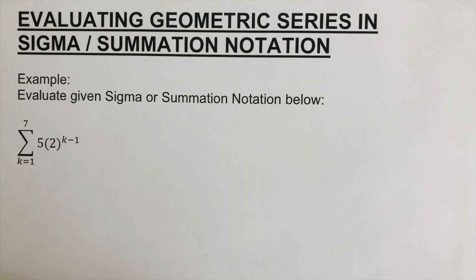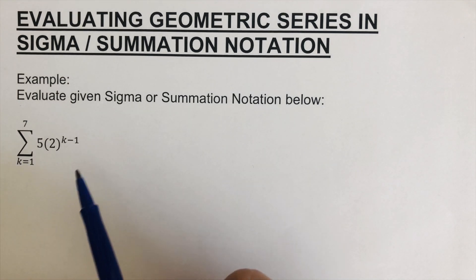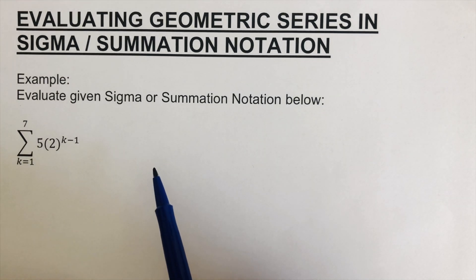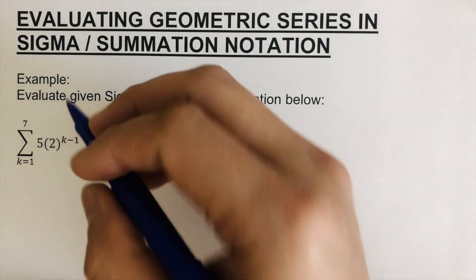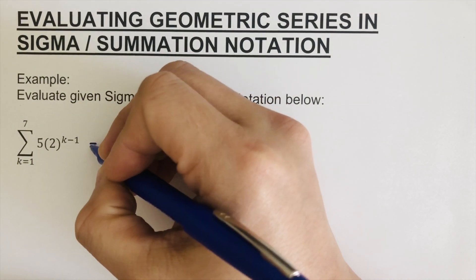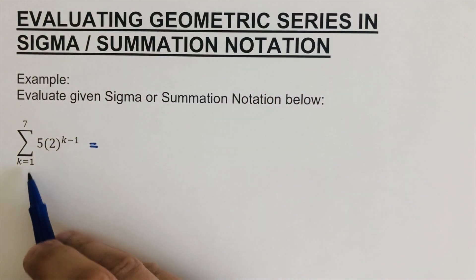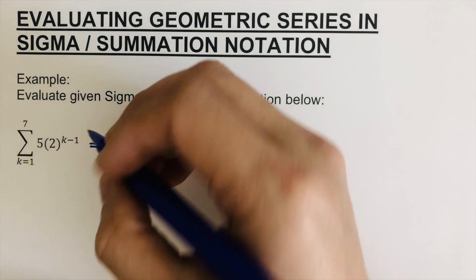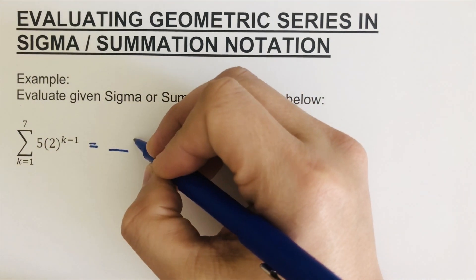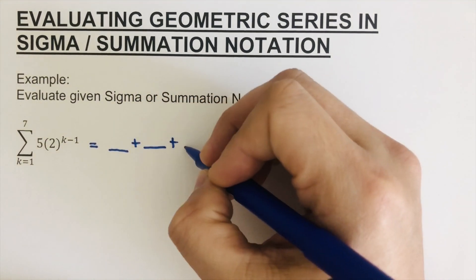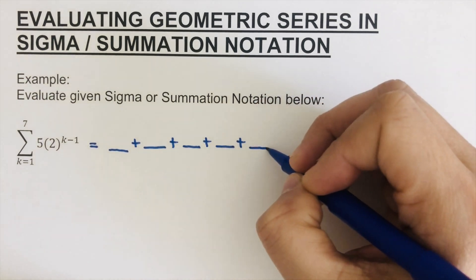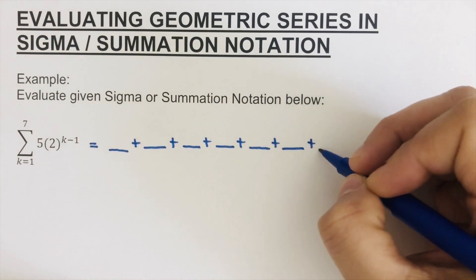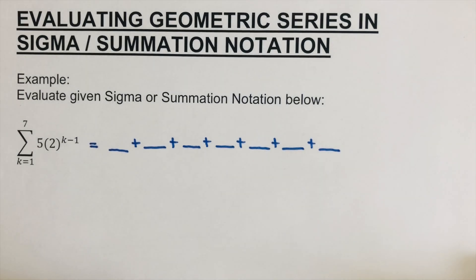The first step is to list them all out so we can see a better picture of what numbers are contained in this sigma notation. Since there are seven of them, I'm going to write seven blanks: one, two, three, four, five, six, seven.